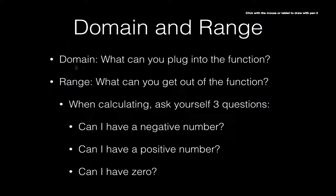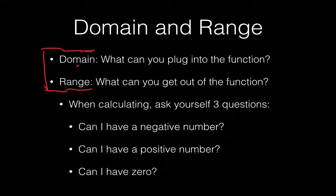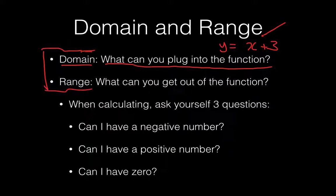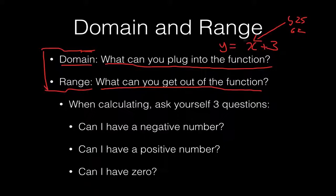Now we get to something called domain and range. These tend to bother a lot of students the most. The domain basically asks: what can you plug into the function? If you had a function, what are you legally allowed by the rules of math to plug in for an x value? Am I allowed to plug in 5, 25, or 62? That's what the domain answers. Now what about the range? The range asks the question: what can you get out of the function? If I plugged in whatever numbers, what numbers can I get out? Can I get 28? Can I get 96? Can I get 120? These are the questions that the range answers.